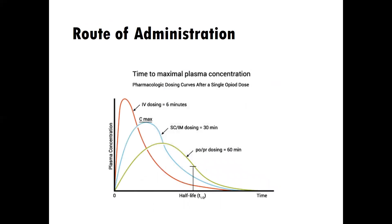We'll talk about differences in plasma concentration and half-life by different forms of administration — routes of administration — such as IV dosing, that's intravenous, versus IM dosing, that's intramuscular, versus PO dosing, which is by mouth.